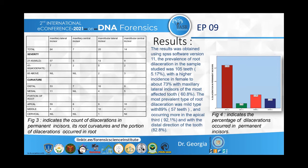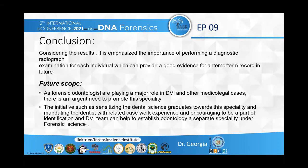Coming to the results, obtained using SPSS software version 11, the prevalence of root dilaceration in the sample study was found in 105 teeth, with a higher incidence in females at above 73%. The most affected teeth were the maxillary incisors at 60.8%. The most prevalent type of root dilaceration was the mild type, with a degree of 20 to 40 degrees, accounting for 89%, involving 79 teeth, occurring more in the apical third region at 92.1%, with a distal direction of 52.8%. Figure three shows a tabular column of the count of tooth dilaceration, with the count being more in maxillary lateral incisors, followed by mandibular lateral incisors, maxillary central incisors, and mandibular central incisors.